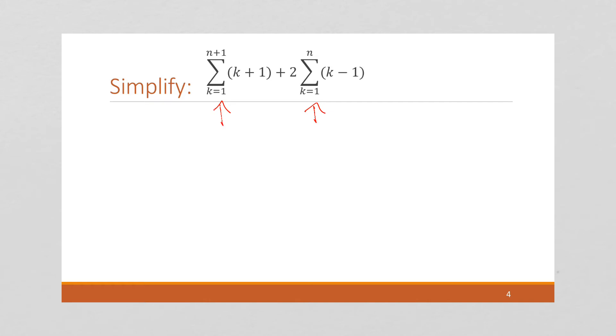And I want to add them together. We've got the same lower bound, but the upper bounds are different.